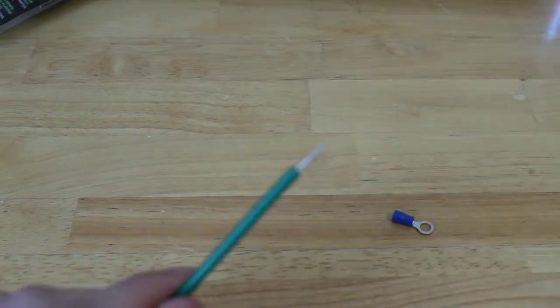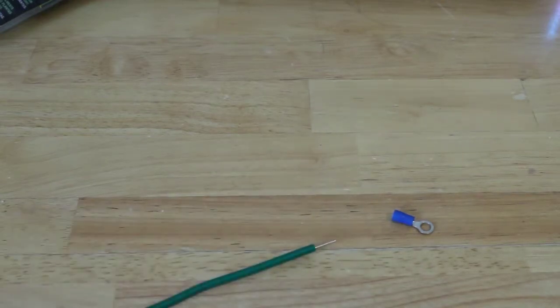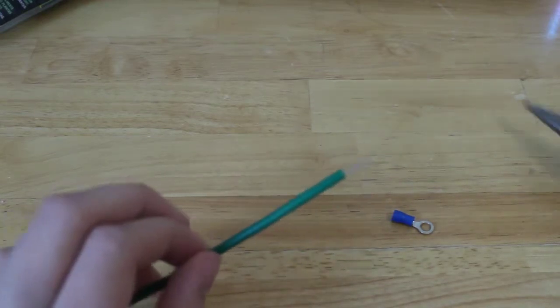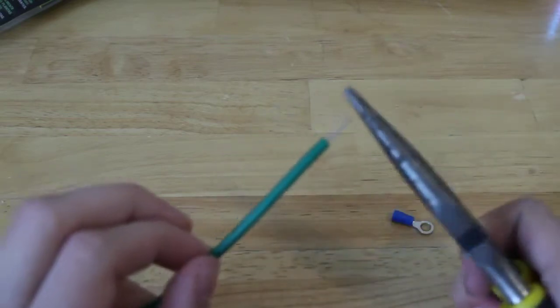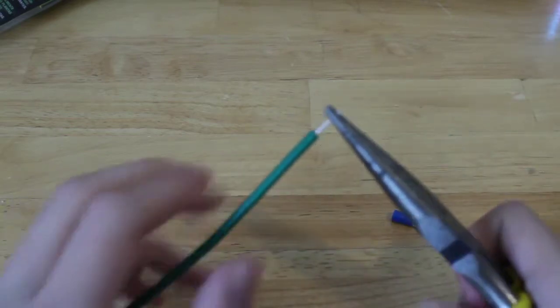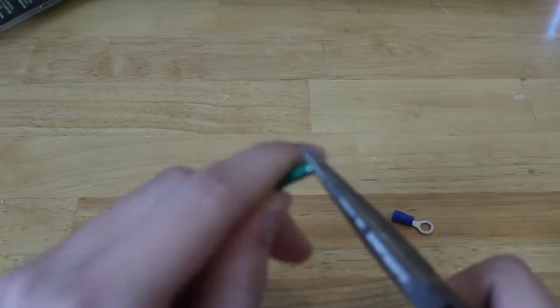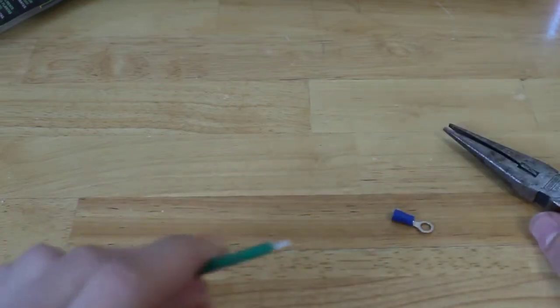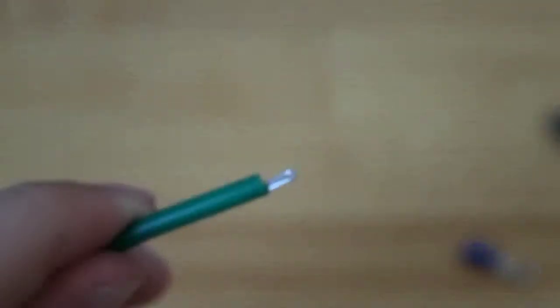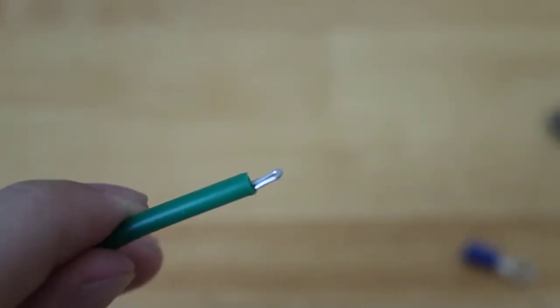So you can see I have the exposed wire. Then we're going to loop the end of the wire into a little loop so we're just going to take some pliers and turn it on itself and close it. Now you're going to need a tight loop, a small loop.